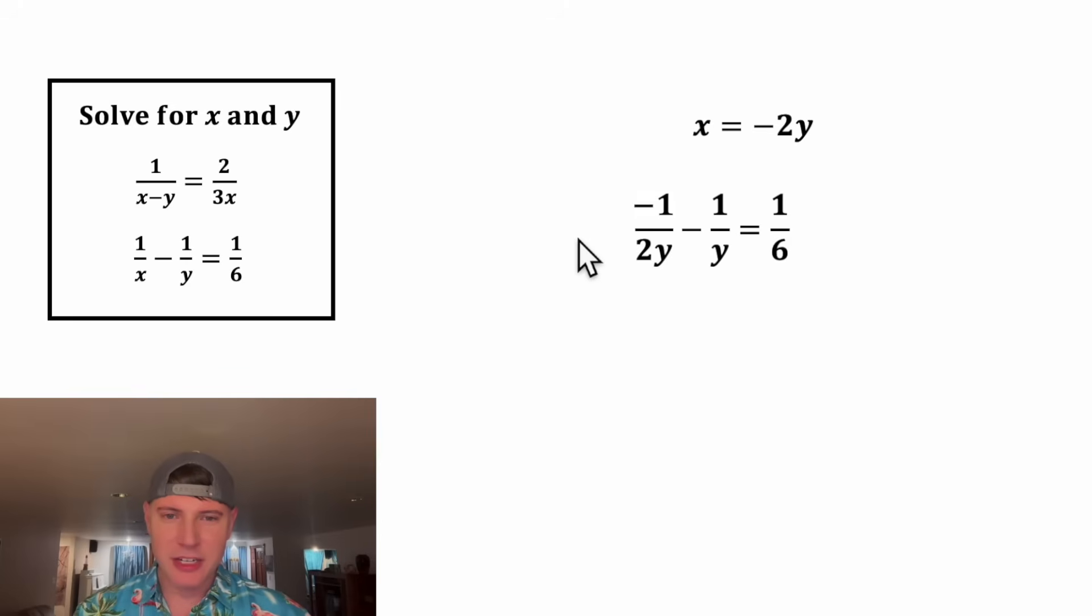Let's pull the negative out here, so the common denominator would be 2y. We can multiply top and bottom of this fraction by 2. 2 times 1 equals 2, and 2 times y equals 2y. Now our two fractions have a common denominator. We can write them as a single fraction: negative 1 over 2y minus 2 over 2y equals negative 1 minus 2 over 2y, which is negative 3 over 2y.